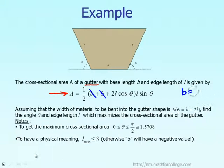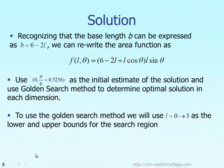After you replace variable B with 6 minus 2L, you can see the cross-sectional area of the gutter that you want to maximize. What we want to maximize is given as a function F involving the first variable, length, and the second variable, theta, given by the formula on the screen.